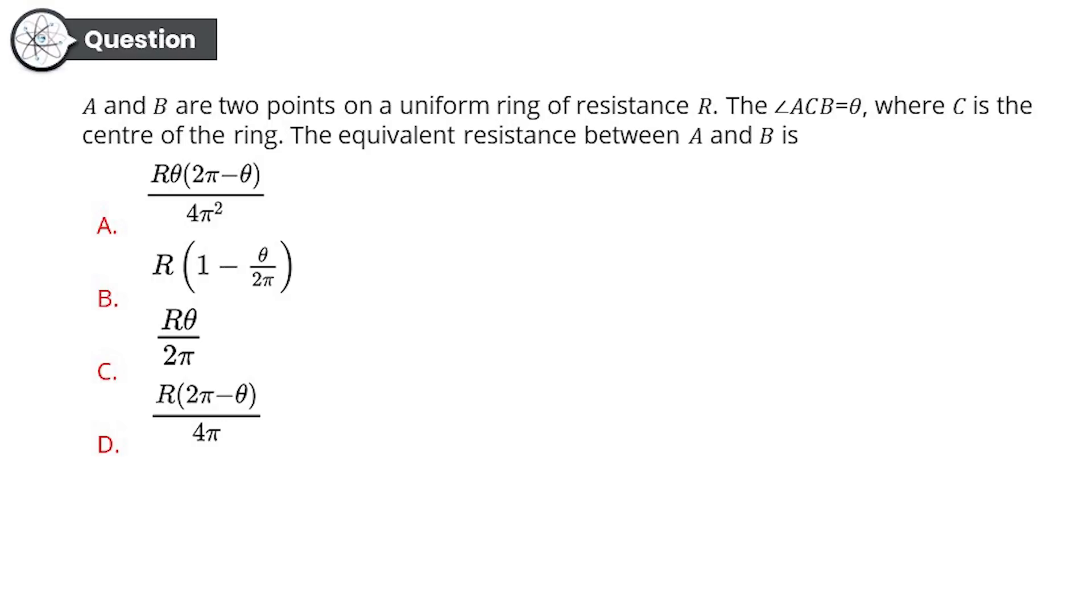Option A: Rθ(2π - θ)/(4π²). Option B: R(1 - θ/2π). Option C: Rθ/2π. Option D: R(2π - θ)/4π. Now yes, the question looked pretty simple. I hope the answer was as well.